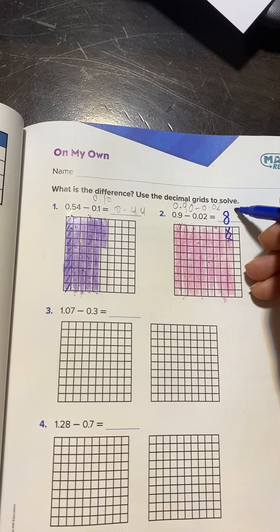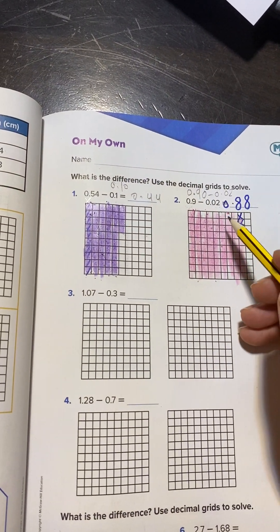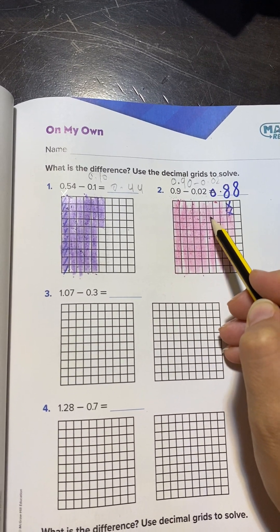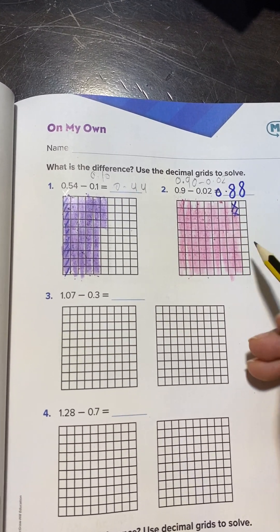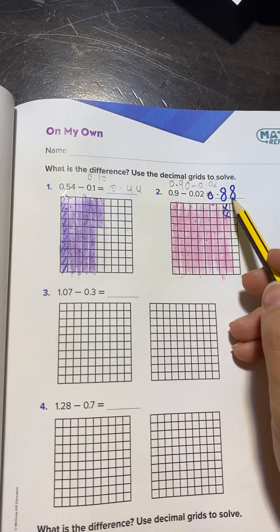70. If you count: 10, 20, 30, 40, 50, 60, 70, and 1, 2, 3, 4, 5, 6, 7, 8. So the answer is 70 hundredths.